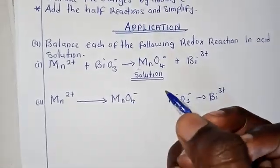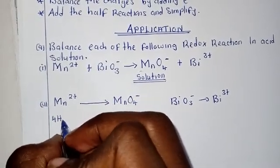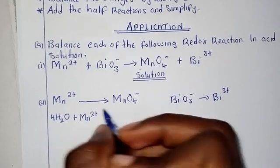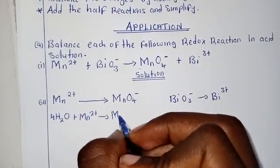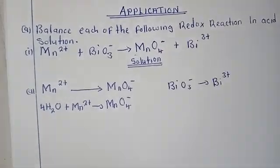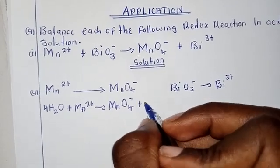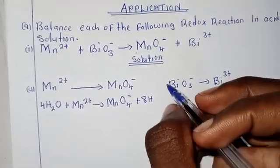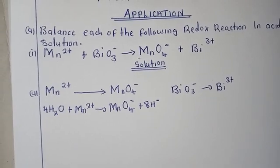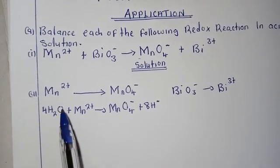Now let's balance oxygen. We balance oxygen by simply adding water to the equation. On this side we have four oxygen atoms; on the other side we don't have anything, so we add 4H₂O. That gives us four oxygen on each side. But now we have eight hydrogen on one side and nothing on the other, so we add eight H⁺ ions.